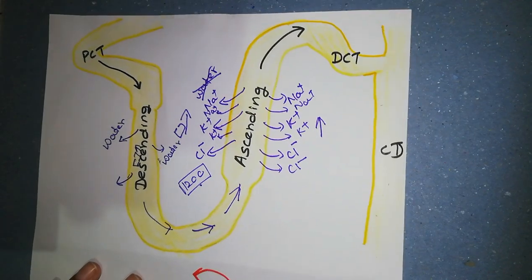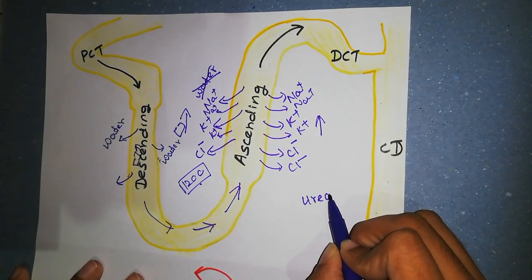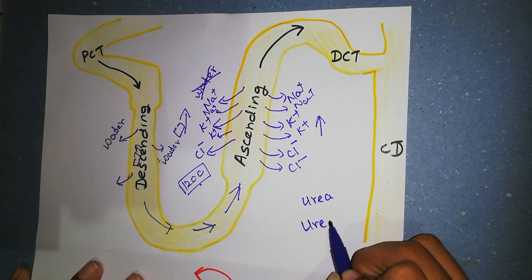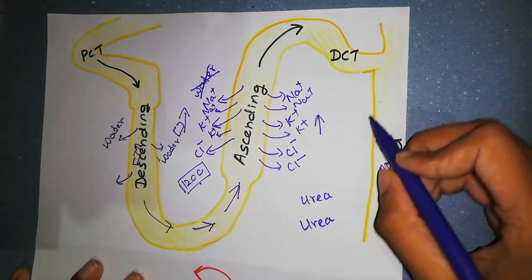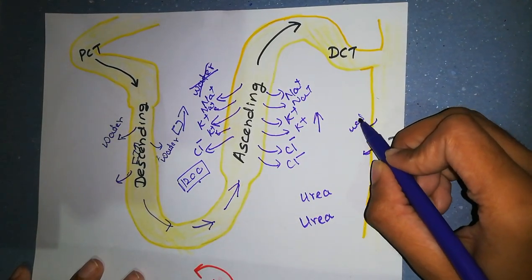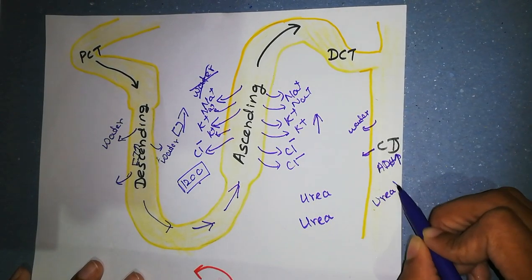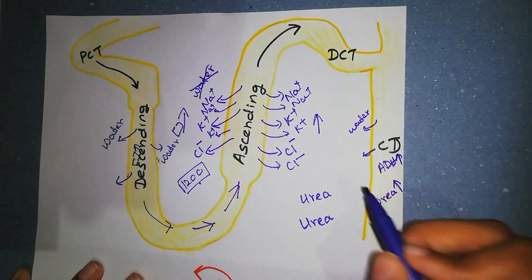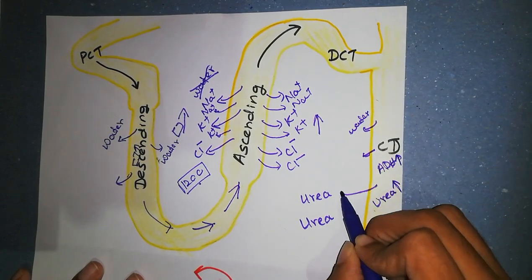Point number three. Urea also plays a role to produce high osmolarity of medullary interstitium. When ADH level is elevated, water reabsorption is increased from both cortical and inner medullary collecting ducts, causing high concentration of urea in the tubular fluid. High concentration of urea in inner medullary collecting ducts causes urea to diffuse into interstitium.